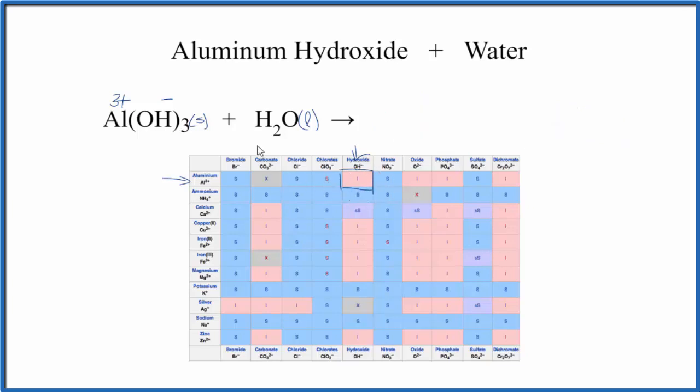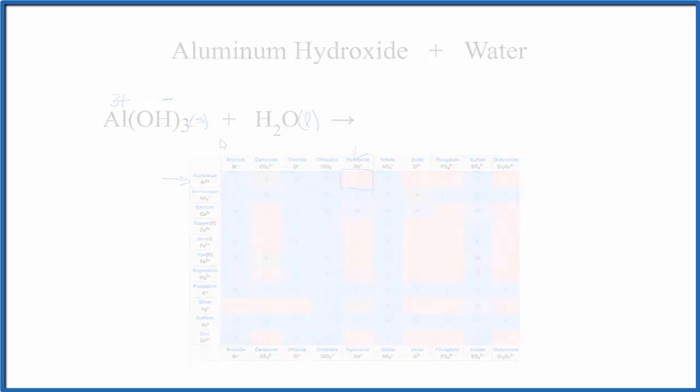The aluminum hydroxide is insoluble, it doesn't dissolve. There may be a very slight amount that does dissolve, but that's negligible, so we don't really need to worry about that. This is Dr. B with Al(OH)3 plus H2O, aluminum hydroxide in water. Thanks for watching.